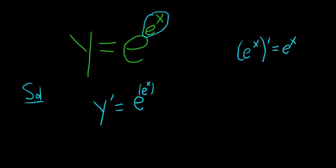You leave it alone. Okay? Then you have to multiply by the derivative of the inside. So the derivative of e to the x is just e to the x.